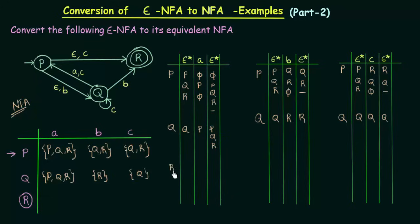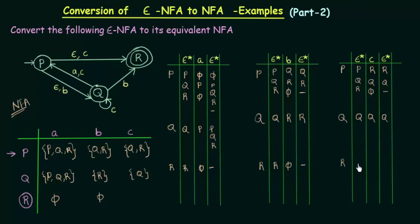Let's do the last one, state R. R's Epsilon closure is R itself, and R on input A doesn't go anywhere, so we get nothing — R goes to Phi on input A. R on input B: R's Epsilon closure is R itself, and on input B it doesn't go anywhere, so that means it is Phi. R on input C: Epsilon closure is R itself, and R on input C doesn't go anywhere, so we get nothing — it is Phi.